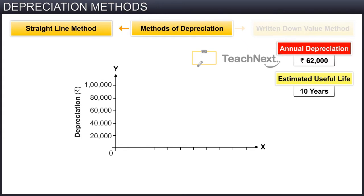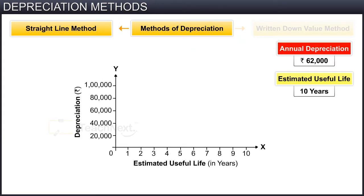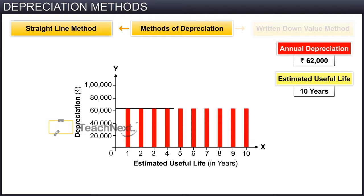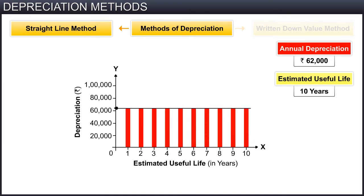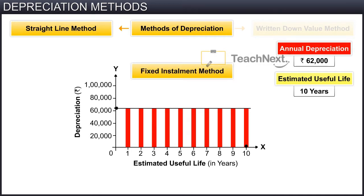If we plot depreciation on the y-axis and the time period in years on the x-axis, you will observe a straight line forming. As such, we call this method the straight line method of depreciation, as the amount of depreciation — in this case 62,000 rupees — remains fixed every year throughout its predicted useful life of 10 years. We also refer to this method as the fixed installment method.